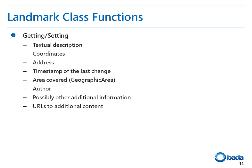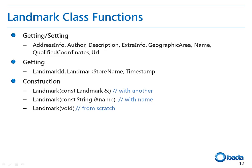By using the landmark class methods, you can get or set data such as the address info, author, description, extra info, geographic area, name, qualified coordinates, and URL. In addition, there are methods to get the landmark ID, landmark store name, and timestamp. The landmark class has three constructors: you can duplicate a landmark, create a landmark with a name, or create an empty landmark and fill in the details later.